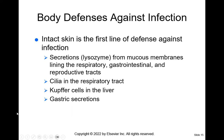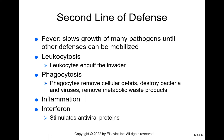The second line of defense involves fever, which slows the growth of pathogens until other defenses are mobilized — white blood cells come on the scene. Leukocytosis occurs when leukocytes engulf the invader, gobbling up bacteria. Phagocytosis is also part of the second line of defense, where phagocytes remove cellular debris, destroy bacteria and viruses, and remove waste products.